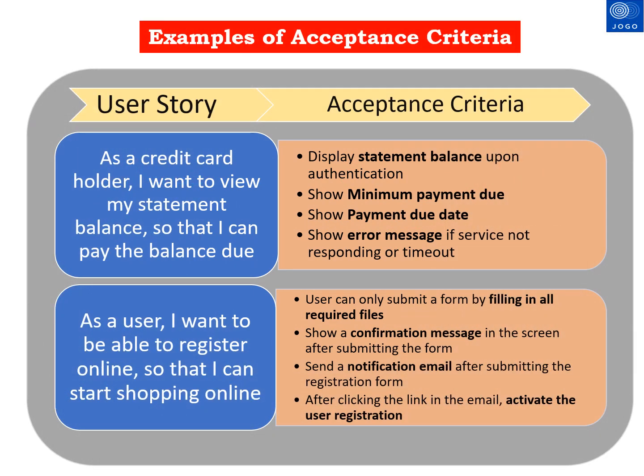You can see two examples of user stories along with acceptance criteria. The left side items in the table are user stories and the right side items are acceptance criteria. The first user story is: 'As a credit card holder, I want to view my statement balance so that I can pay the balance due.' There are four acceptance criteria: display statement balance upon authentication, show minimum payment due, show payment due date, and show error message if service is not responding or timeout.